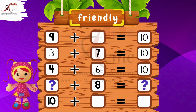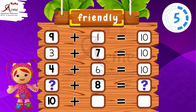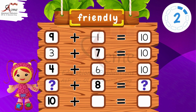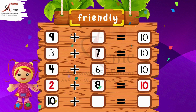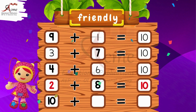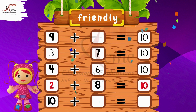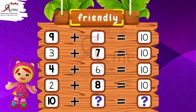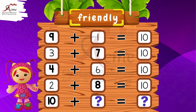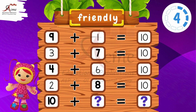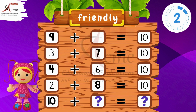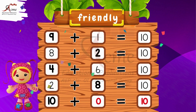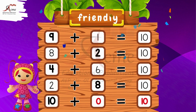What number do we need to add to 8 to make it a friendly number? That's right — 2 plus 8 equals 10. Great job. What number do we need to add to 10 to make it a friendly number? Yes — 10 plus 0 equals 10. Well done.